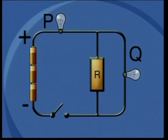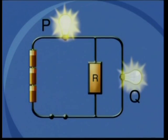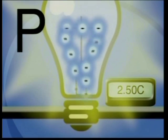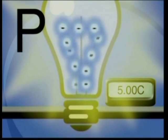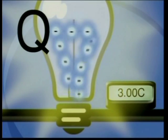Let us use a model to better understand this concept. Here is a model of the circuit that we used. It has a battery of cells, lightbulbs P and Q, the resistor R and a switch. Let's count the number of Coulombs of charge passing through lightbulb P when the switch is closed. We will count in Coulombs of charge: 1.25, 2.50, 3.75, and finally 5 Coulombs of charge passed through in one second. Now let's look at lightbulb Q. Lightbulb Q has only 3 Coulombs of charge passing through it in one second. Thus we are able to conclude that the current passing through lightbulb P is greater than the current passing through lightbulb Q because more Coulombs of charge pass through P than through Q in the same time.